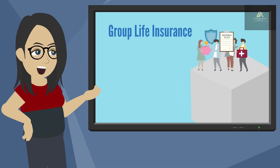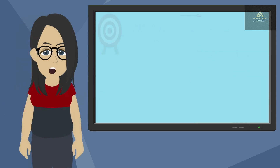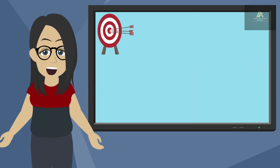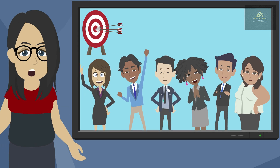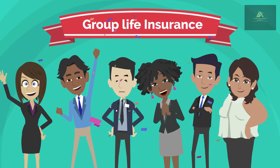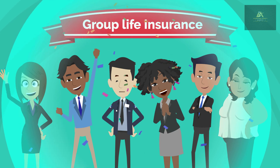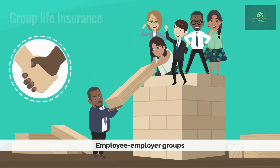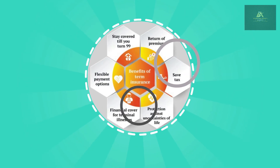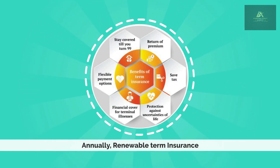You have now learned the concepts of group life insurance. Let's review some of the key areas from this section that will help you prepare to pass. Group life insurance is a plan that provides coverage to more than one person under one policy. It is usually written for employee-employer groups and usually written as renewable term insurance.